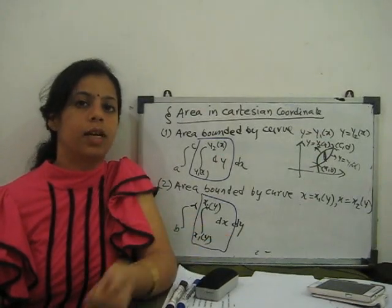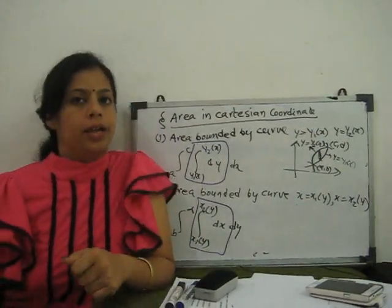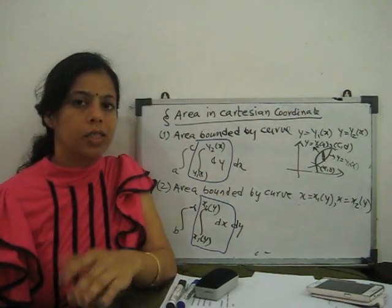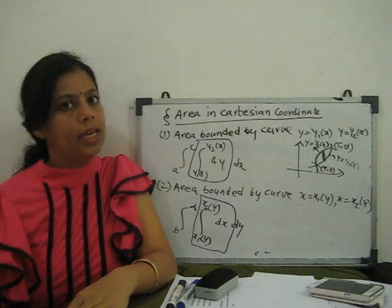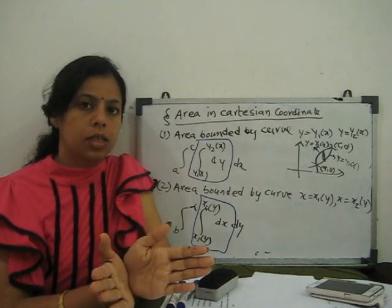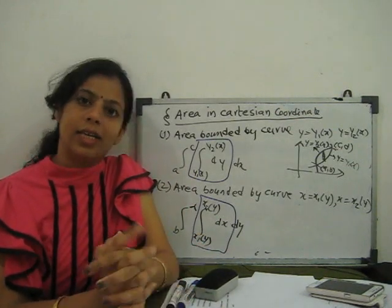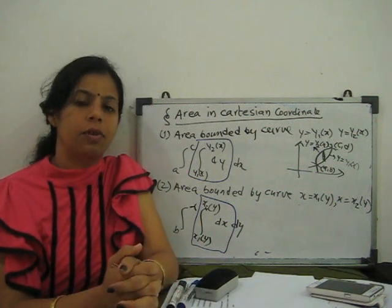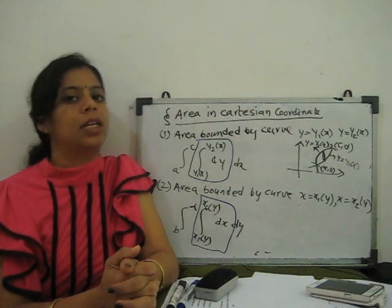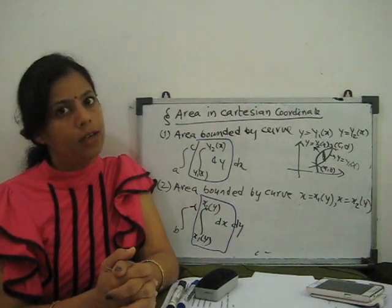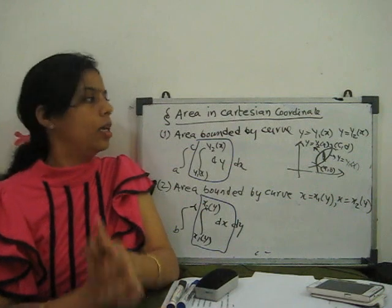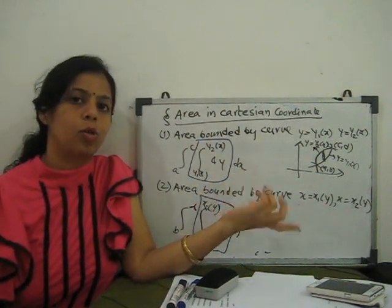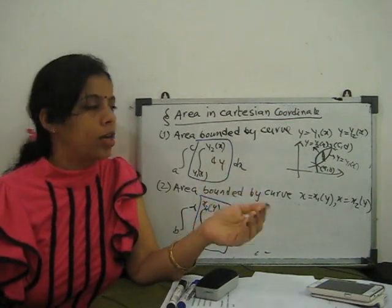Welcome to our next video where we learn about area for Cartesian coordinates. If a curve is given in x-y coordinates, how do we find the area? Area is a two-dimensional quantity, always given in the x-y direction. If we discuss volume, it goes into three dimensions. So area is always two-dimensional, meaning it requires double integration with respect to x and y.